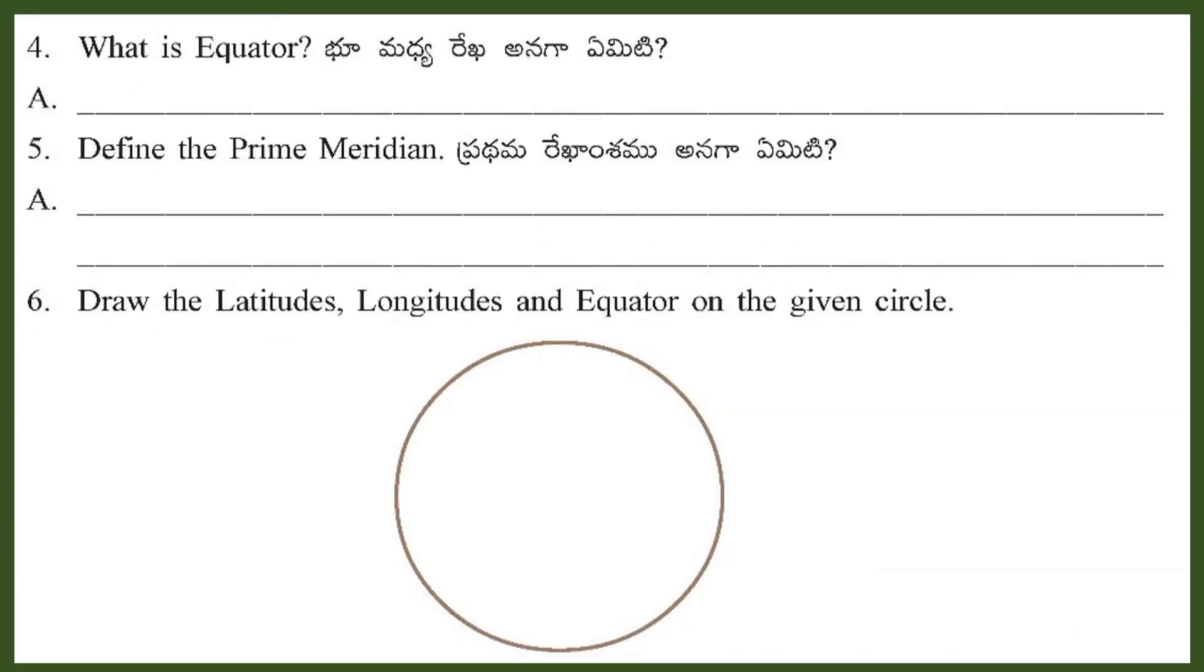Question 4: What are longitudes? Answer: The latitude that divides the Earth into two equal parts is called equator.